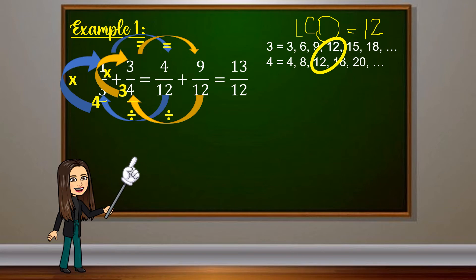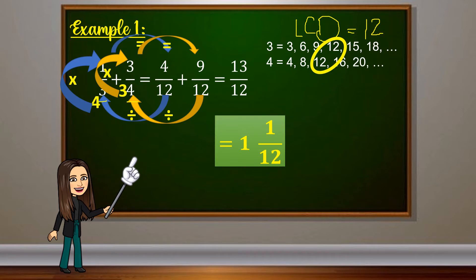Simply copy the denominator and add the numerators. We are adding integers with the same sign, so 4 plus 9 gives us 13, positive, over 12. Converting this improper fraction to a mixed fraction: 13 divided by 12 gives whole number 1, remainder 1. Therefore, 1 third plus 3 fourths equals 1 and 1 over 12.